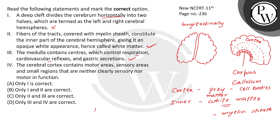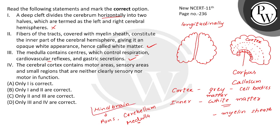The medulla oblongata belongs to the hindbrain. The midbrain contains the corpora quadrigemina and a canal that passes cerebral fluid. The hindbrain includes the cerebellum, pons, and medulla oblongata. The medulla oblongata contains centers for respiratory rhythm, cardiovascular activity, heart function, and gastric secretion. So this statement is correct, and medulla is hindbrain, not midbrain.